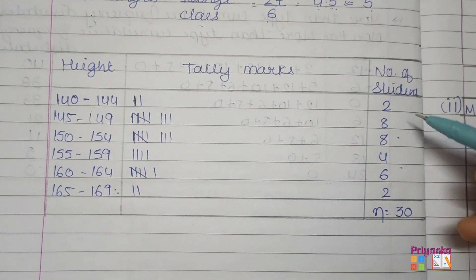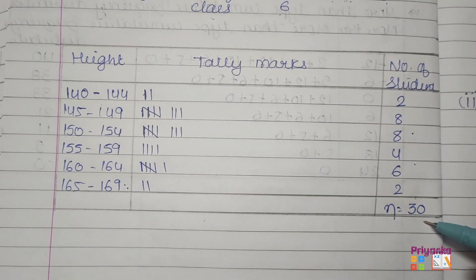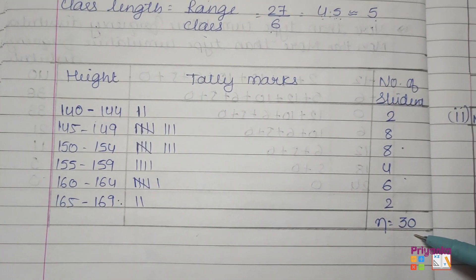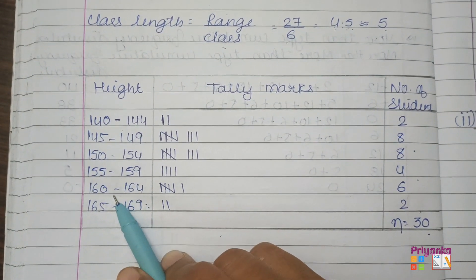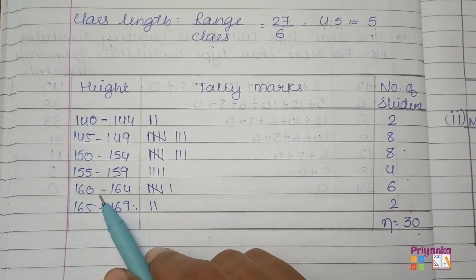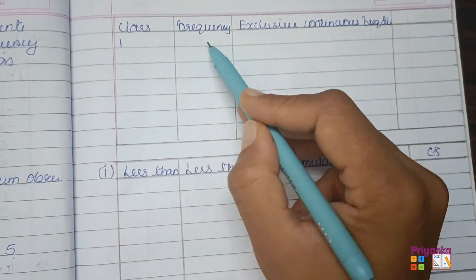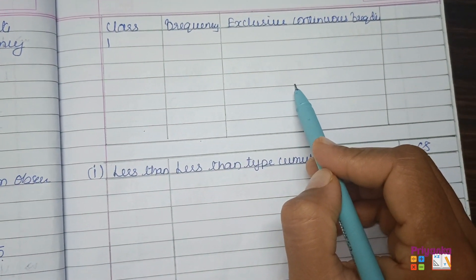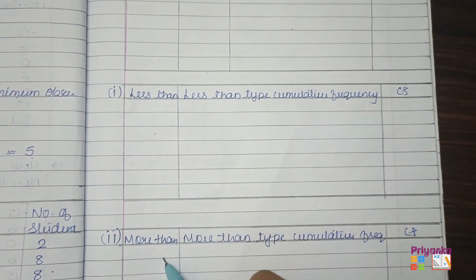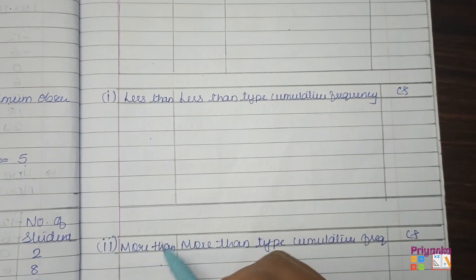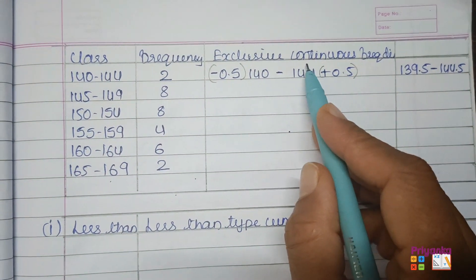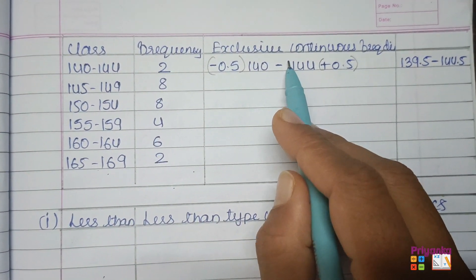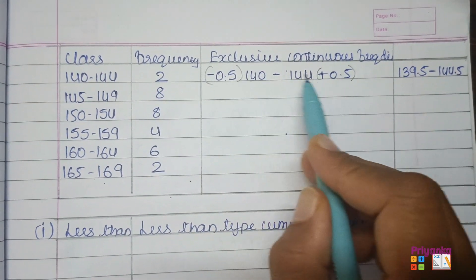After completing the tally marking, I wrote the frequency and made a total: n equals 30. In this question they also asked to calculate less-than and more-than cumulative frequency. The class is in inclusive form, so first the inclusive class will be converted into exclusive class. We'll take the class and the frequency and turn it into exclusive continuous frequency distribution, then proceed to less-than and more-than cumulative frequency.